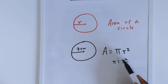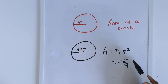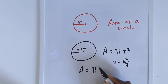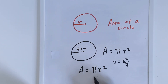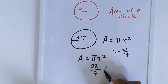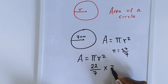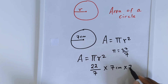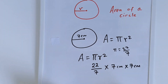But first, you have to always write down your formula, and remembering the formula is also key. So, given that the formula for area of a circle is equal to pi r squared, and we have the radius as 7, the area of this circle will be 22 over 7 multiplied by r, which is 7 cm, times r, because it is squared.